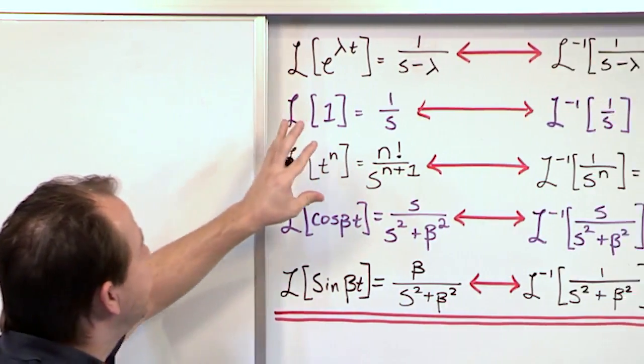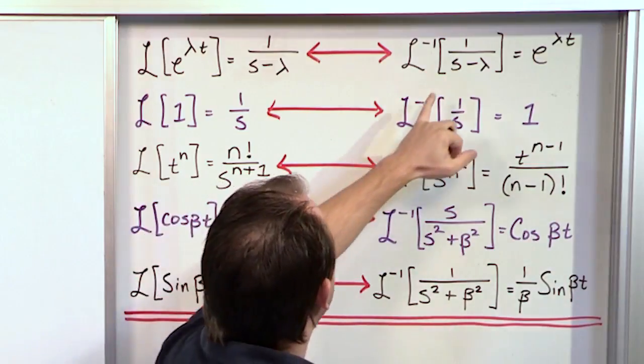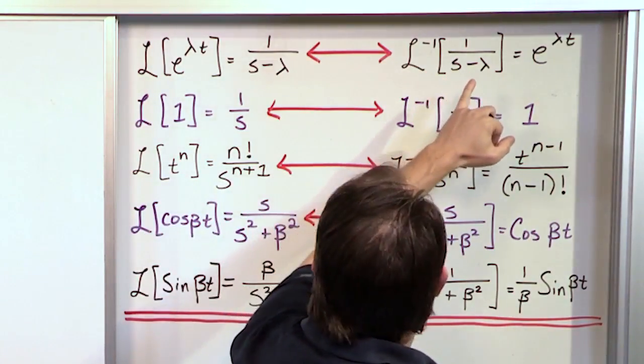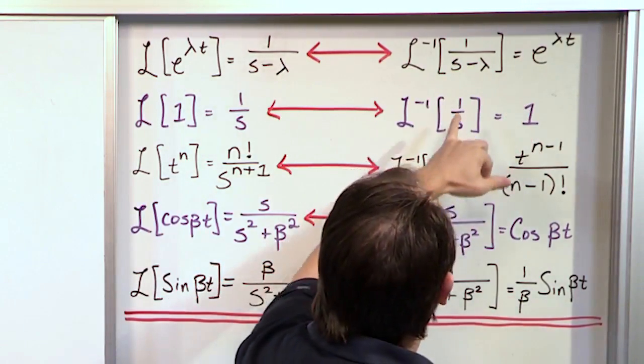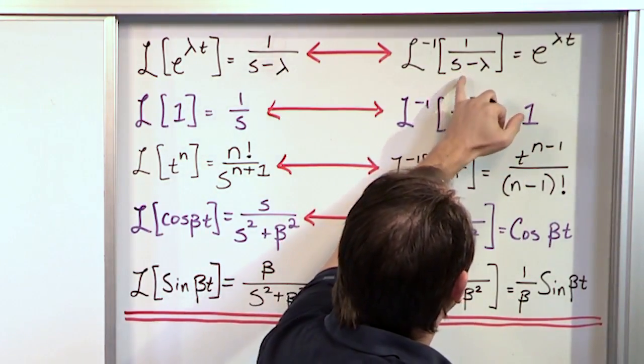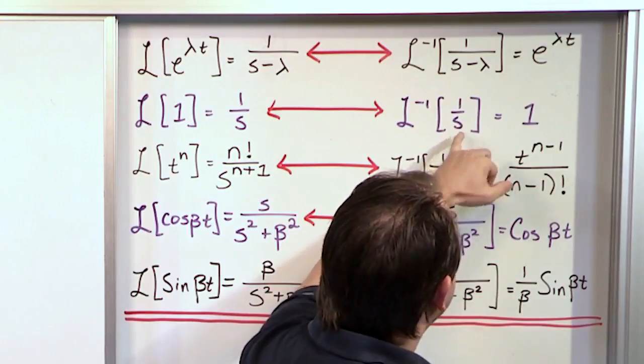So the first thing you would do is go over here and see if you can find something similar. Well, this isn't quite right because what we have in our problem is 1 over s squared minus a number, or plus a number. So obviously this is not squared, so this cannot be used. This, for the same reason, doesn't match it. This doesn't really match it.